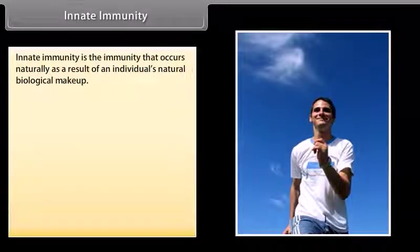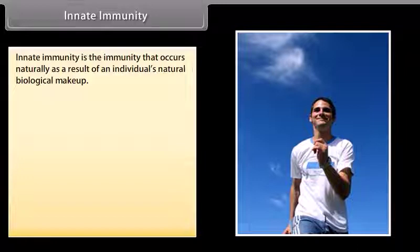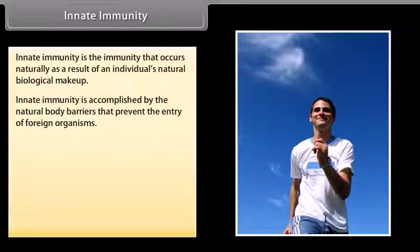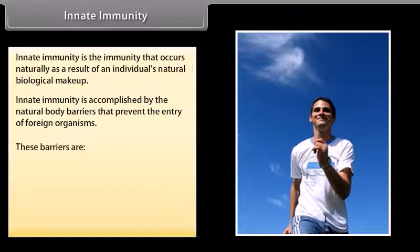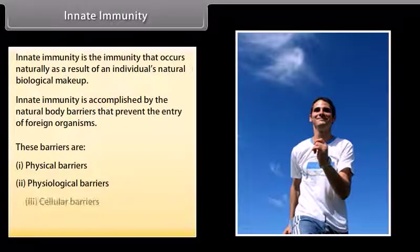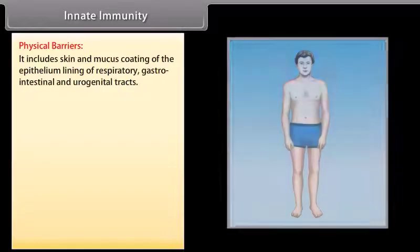Innate immunity is the immunity that occurs naturally as a result of an individual's natural biological makeup. It is accomplished by the natural body barriers that prevent the entry of foreign organisms. These barriers are: physical barriers, physiological barriers, cellular barriers, and cytokine barriers.